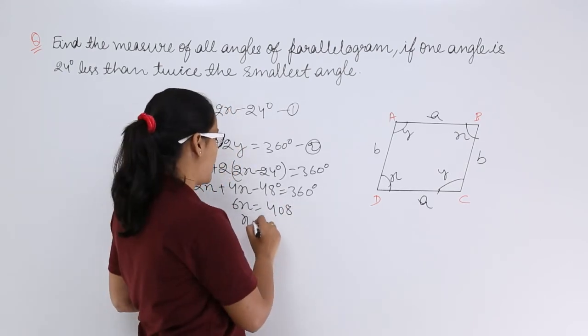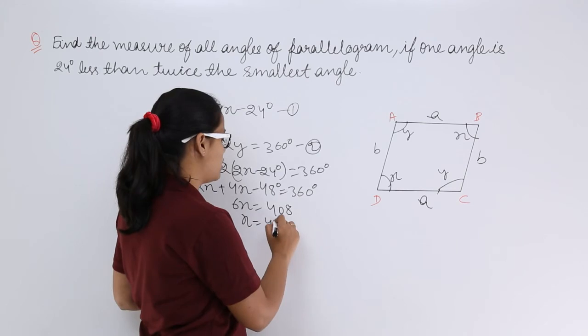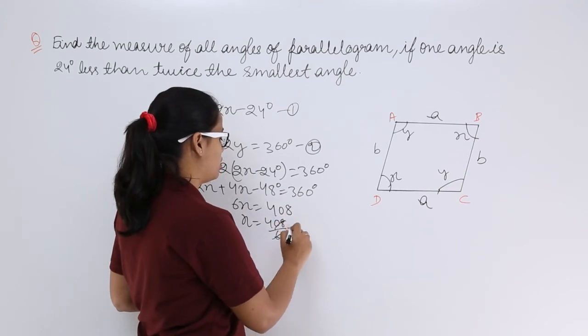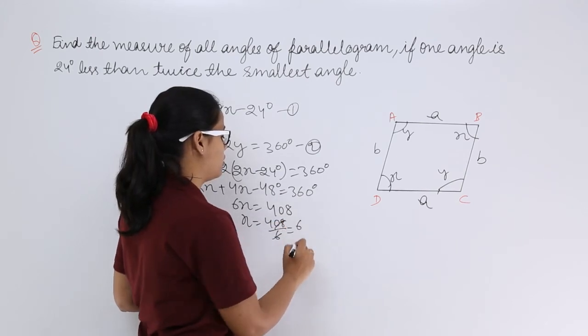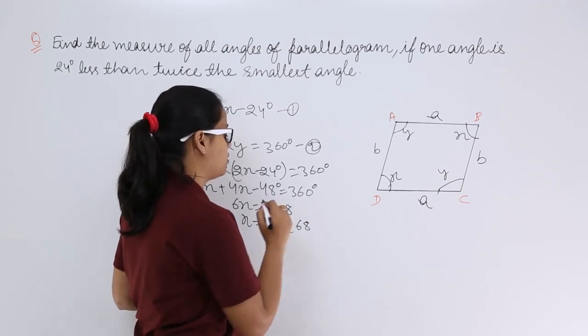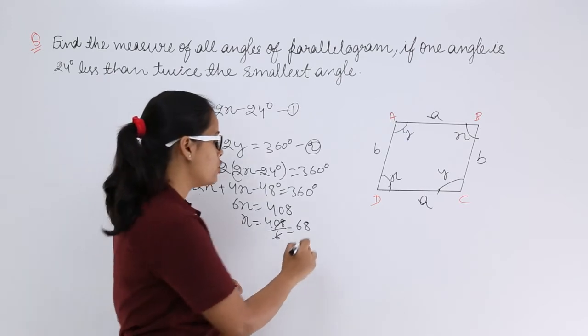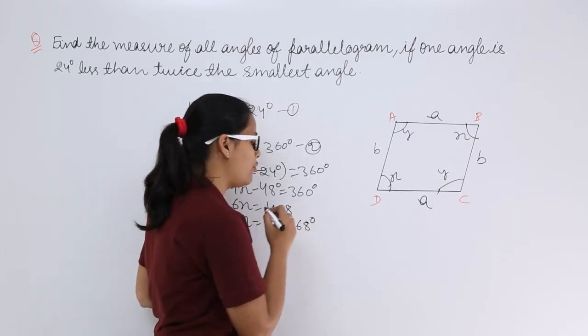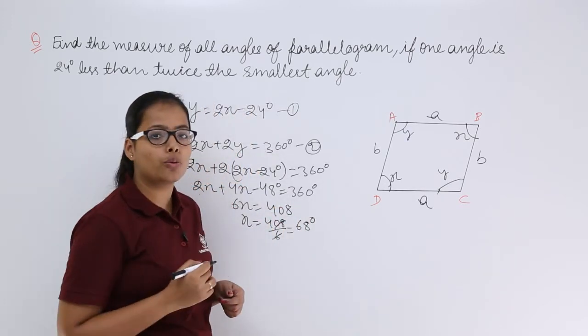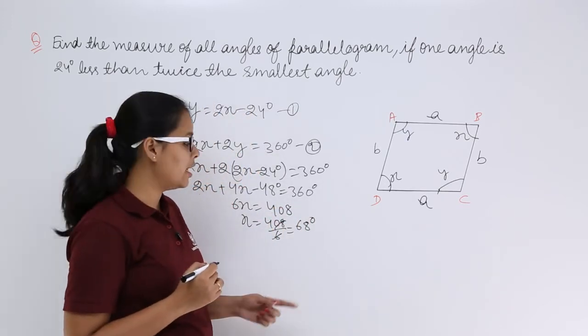Dividing both sides by 6, we get x = 68 degrees. So the value of x is 68 degrees.